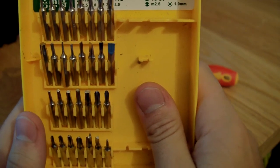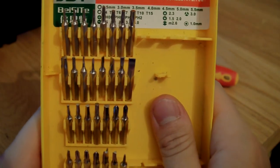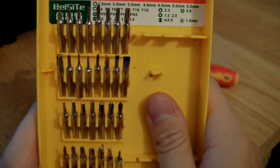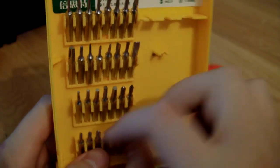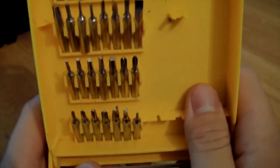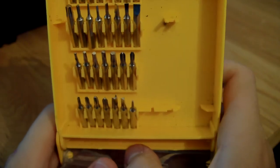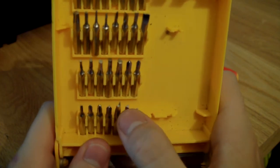You've got your hex screwdriver tips, you've got H2.5, 3, 3.5, 4, 4.5, 5, 5.5. You've got a Y, it's in there somewhere in the bottom, a Y tip, it's 3.0. Triangular screwdriver bit, 2.3, that guy's right there.